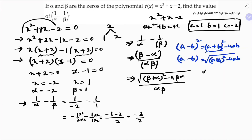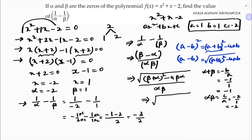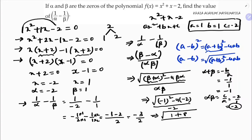Now I calculate: alpha plus beta equals minus b by a, which is minus 1. Alpha times beta equals c by a, which is minus 2 by 1, so minus 2. Substituting: alpha plus beta whole square is minus 1 whole square equals 1, and 4 times alpha times beta is 4 times minus 2 equals minus 8. So the expression under the root is 1 minus minus 8, which equals 9, divided by minus 2.